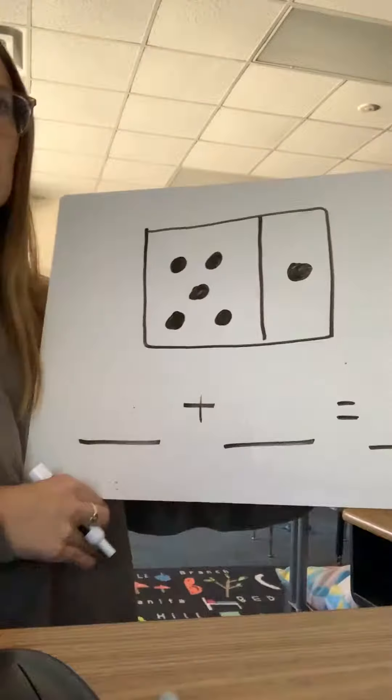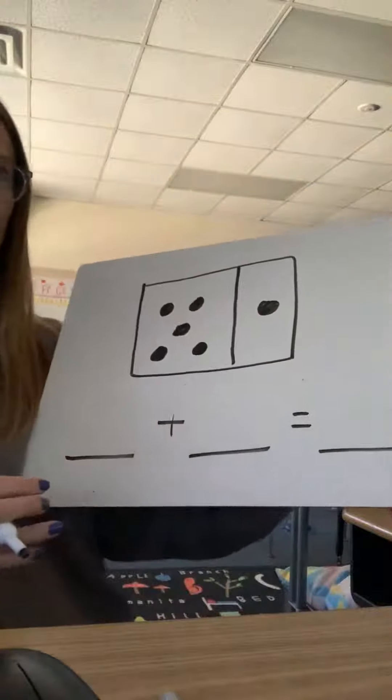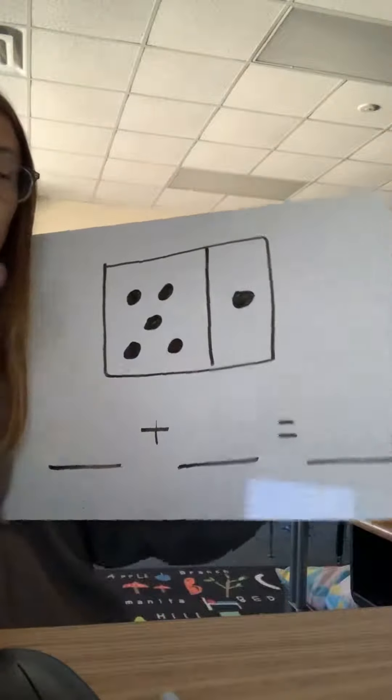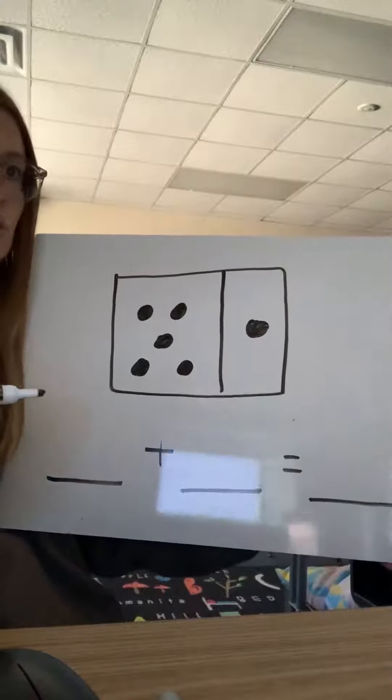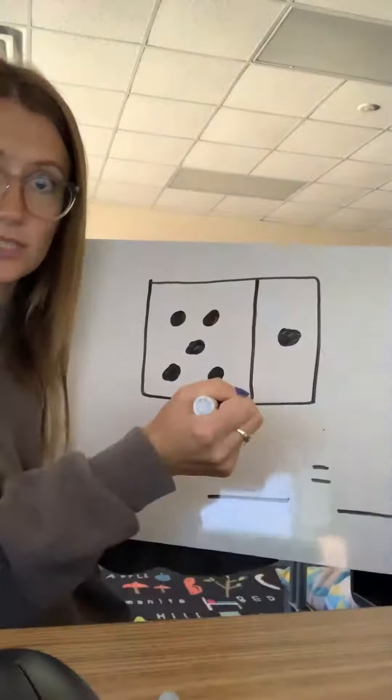So let's take a look. It kind of looks like a domino piece. At the top of your page, it shows a blue domino. We're going to use the counting on strategy to figure out how many dots there are all together.